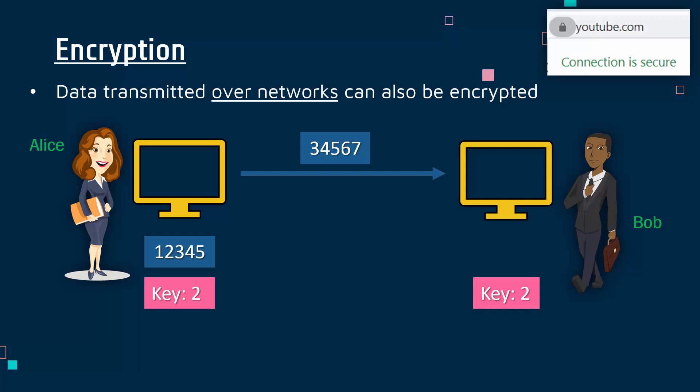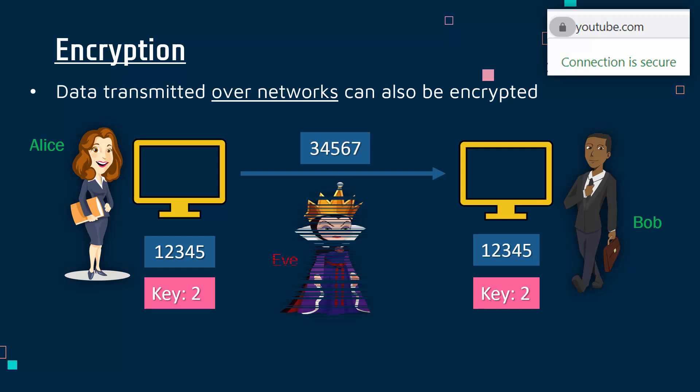Here, the example is very simple and very insecure. The whole point is that once Bob receives the message, it looks like scrambled nonsense — three, four, five, six, seven — but he knows the key and can reverse the process. If somebody like Eve is eavesdropping — maybe she's tapped into a wire or is sniffing a Wi-Fi network, intercepting radio waves — she cannot understand the message because it's been scrambled and she doesn't know the key. Only Alice and Bob know the key.